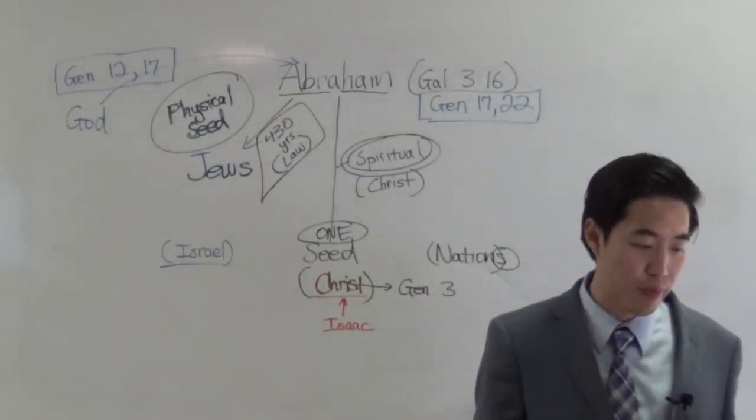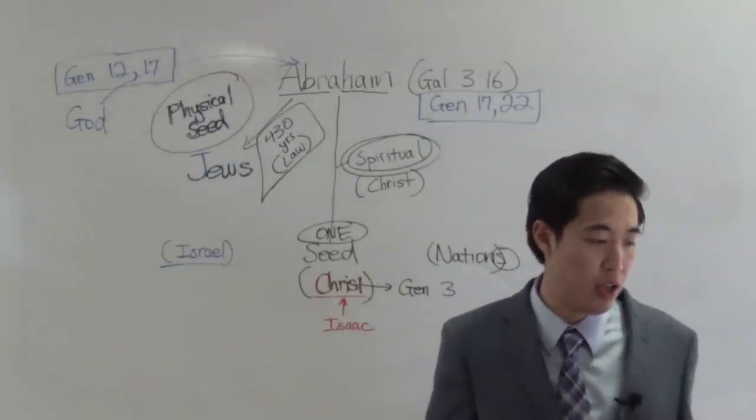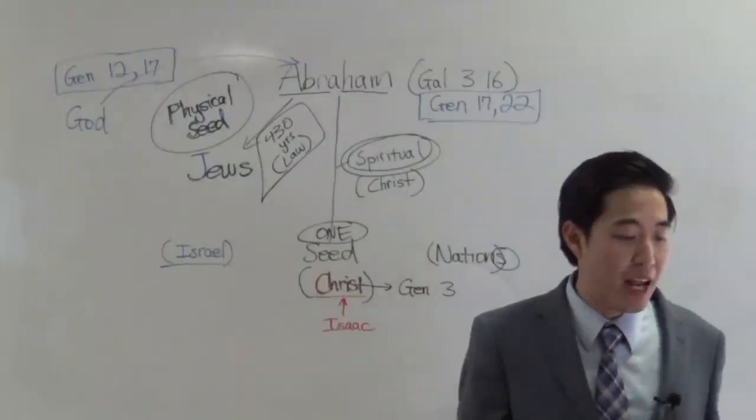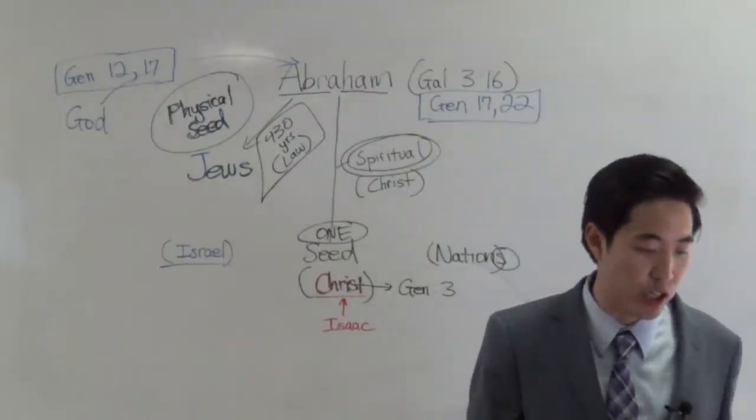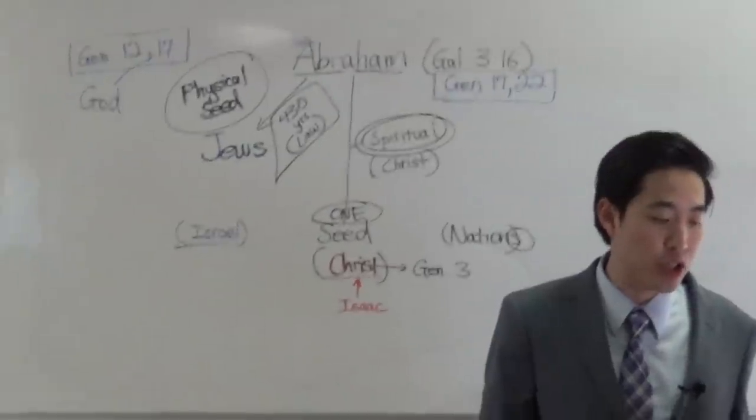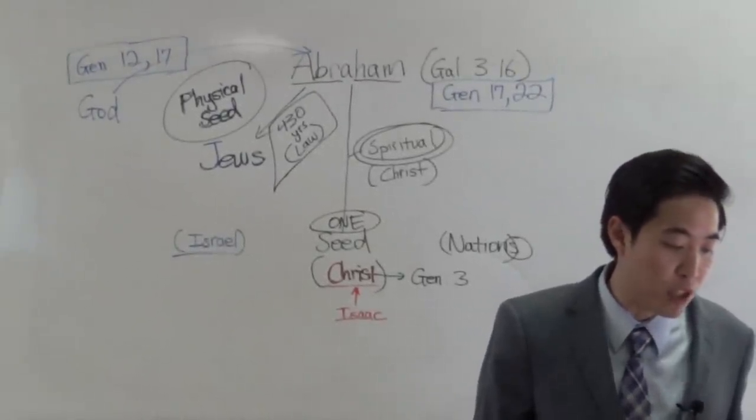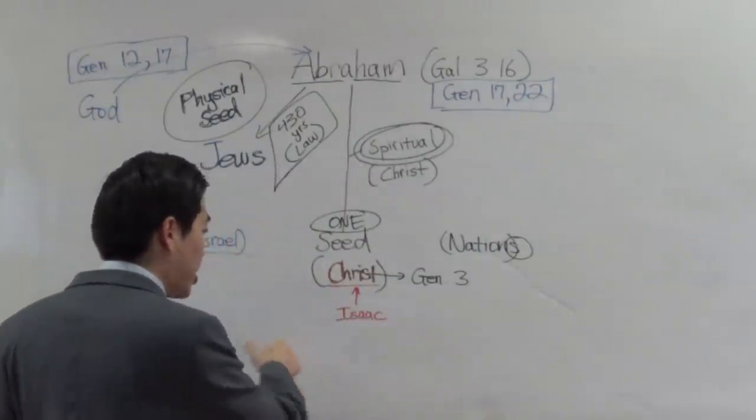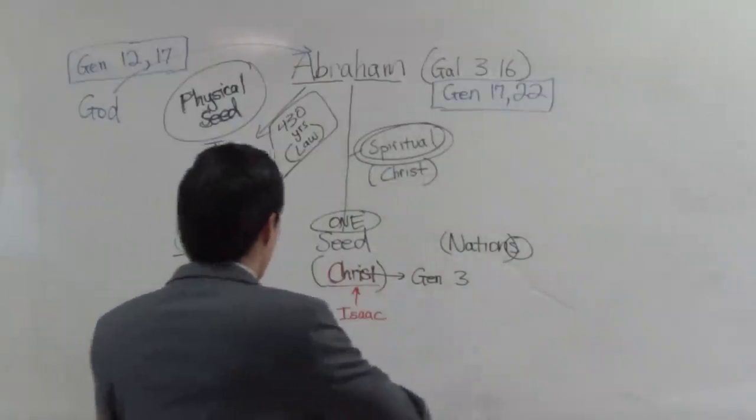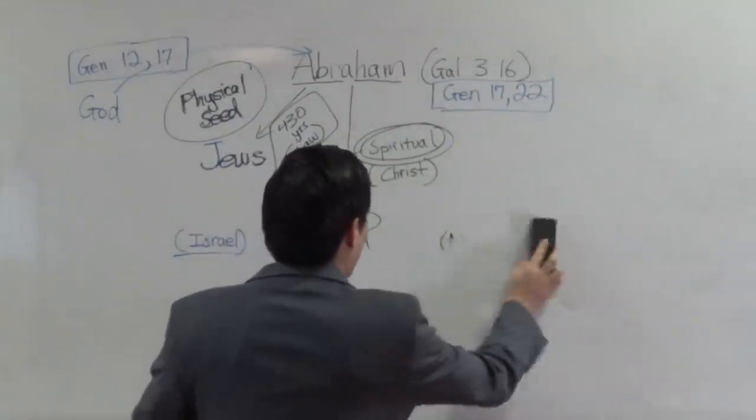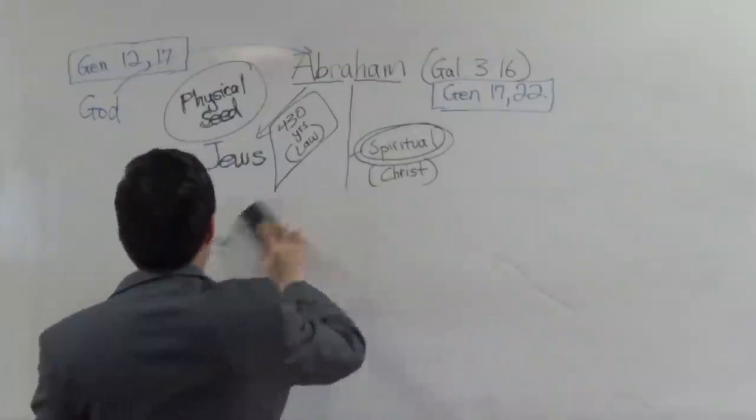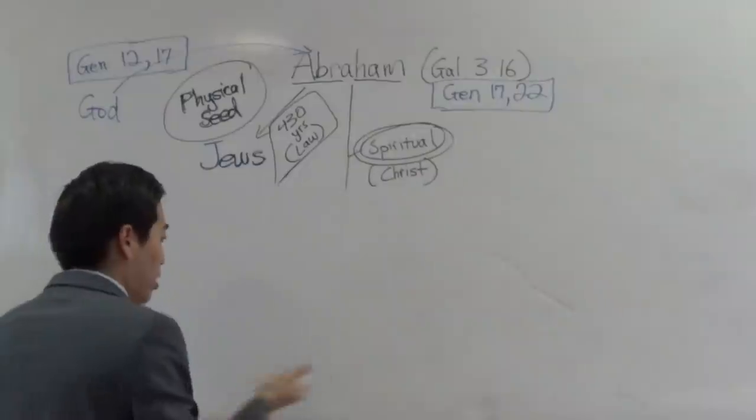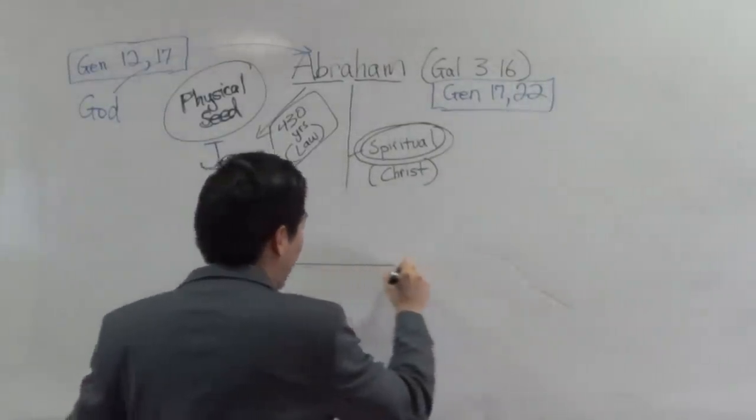Alright, let's keep reading. Wherefore then serveth the law. Okay, so Paul, what's the point of the law then if it's not required for our salvation in this case? It was added because of transgressions. It's because of sins. Till the seed should come to whom the promise was made. So you got to realize this. Now I'm going to draw this out because that way you can understand it better. And I'm going to have to erase this part right here. So here's another part concerning dispensationalism which is going to be important for you.